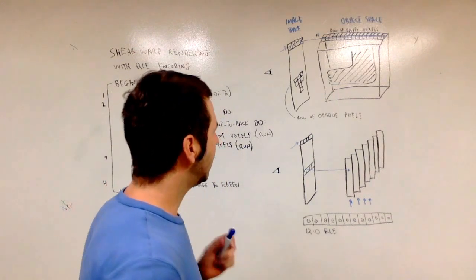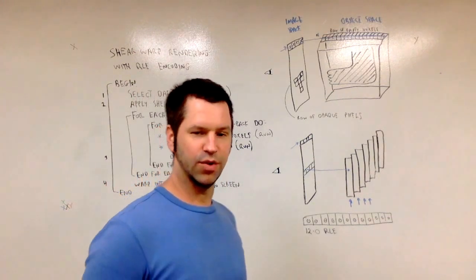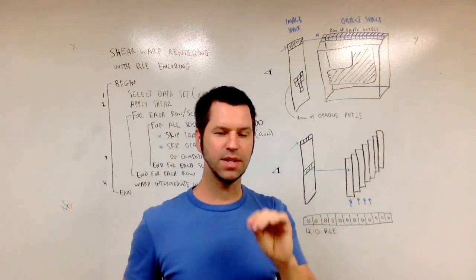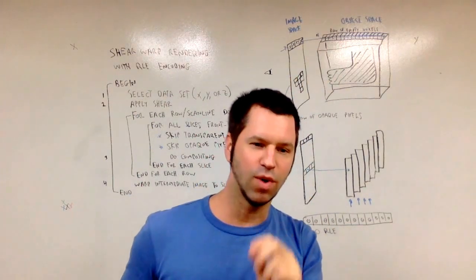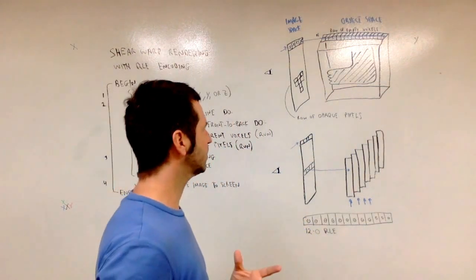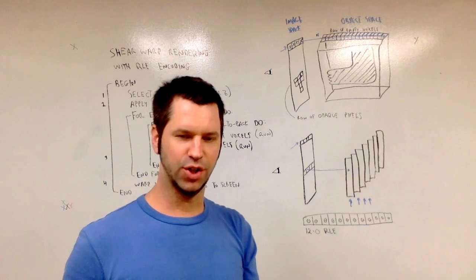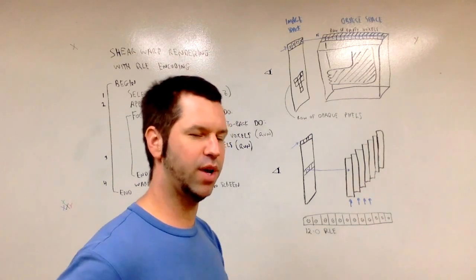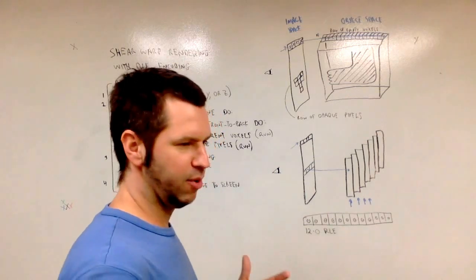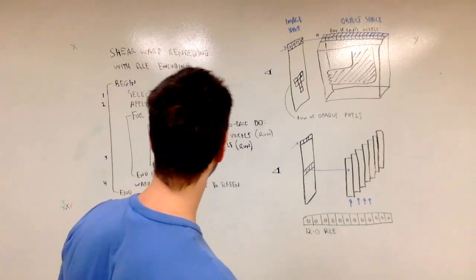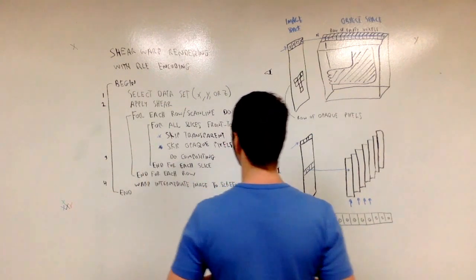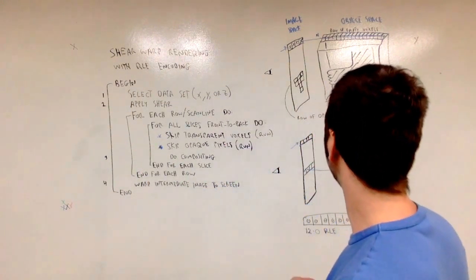The other acceleration technique that is, I would call this an object space based run length encoding or acceleration. The other acceleration technique happens in image space. Well, a combination of object and image space. But let's say it's image space based. And that's this skip opaque pixels part.